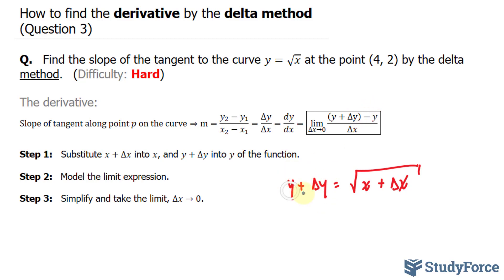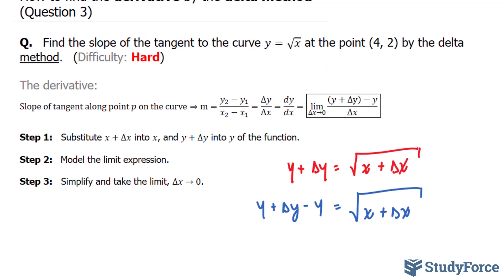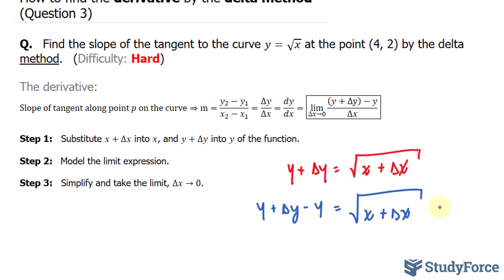So what I will do is subtract the left and the right side by minus y, and here's what happens when you do that. You have y plus delta y minus y on the left side, and on the right side, I have the square root of x plus delta x minus y. And remember, our function is defined as the square root of x, so instead of writing minus y, I'll write down what y is actually equal to, which is the square root of x.